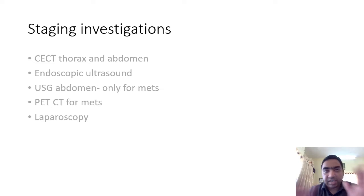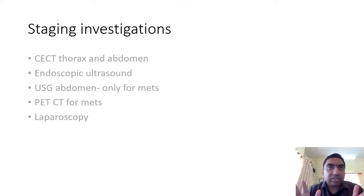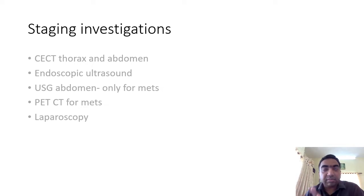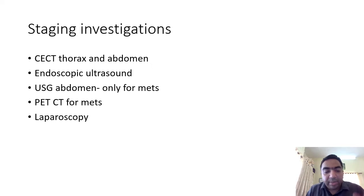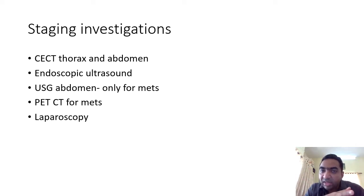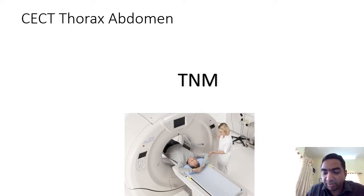Staging investigations for esophageal cancer include: CT thorax and abdomen, endoscopic ultrasound (EUS), ultrasound abdomen especially for metastasis, PET CT for distant metastasis, and laparoscopy for peritoneal metastasis. CT thorax and abdomen can be helpful for T, N, and M staging. Different investigations focus on different components — some on the T stage, some on N, and some on metastatic staging.